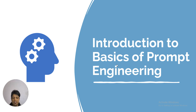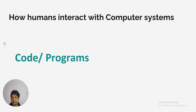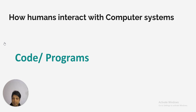You must have heard of this term called prompt engineering. Let's decode it. In order to interact with a computer system we need to write code — a set of instructions written in a programming language like Python, Java, or JavaScript. Now with the advent of large language models like ChatGPT, we can interact with models in our natural language and give instructions in a very simple, natural way.